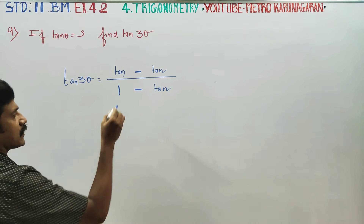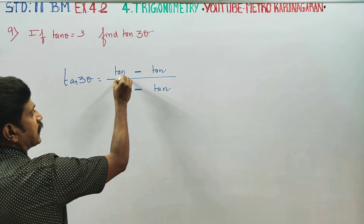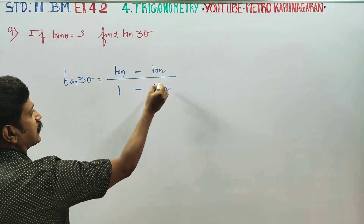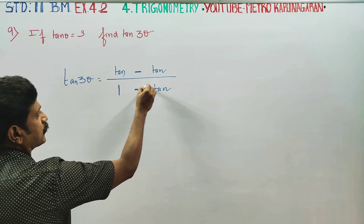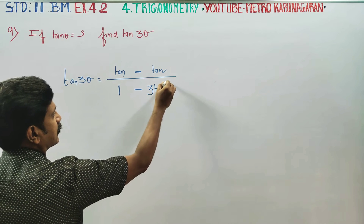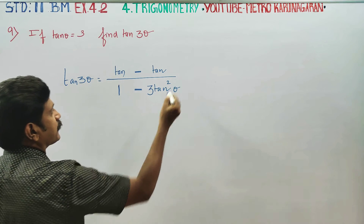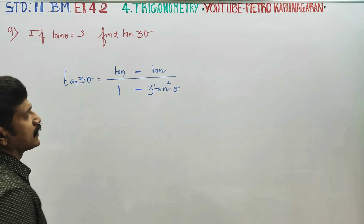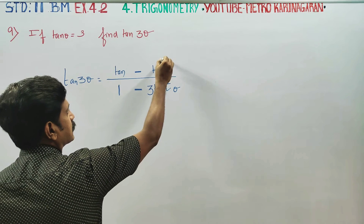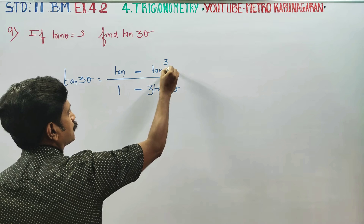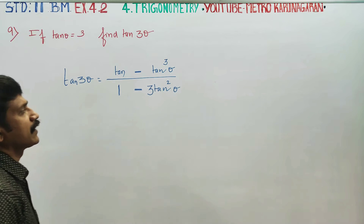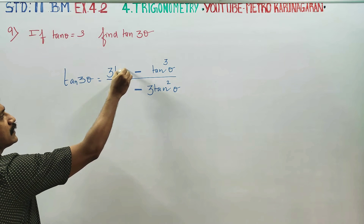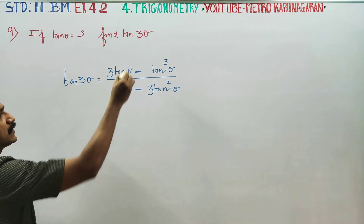Here we go to tan 2 theta. This gives us 3 tan square theta. The formula is: tan 3 theta equals tan cube theta and 3 tan theta — this is the formula.